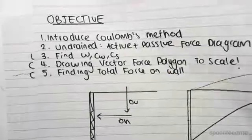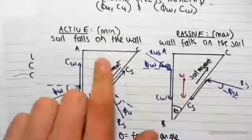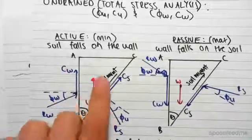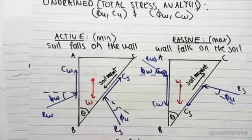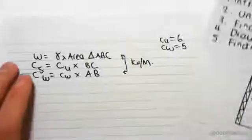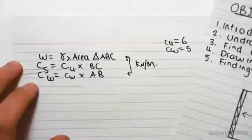To solve this problem, we need to draw a vector polygon. We need to draw in all these forces, and that will allow us to find Rw. We know from the previous video we can find W, Cs, and Cw.